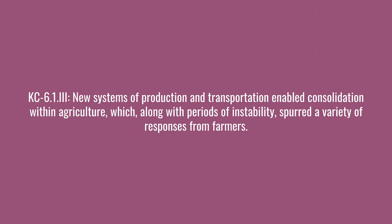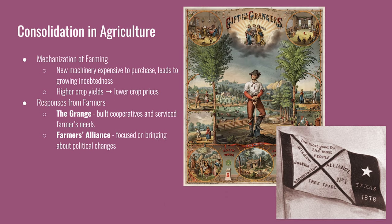The next key concept says new systems of production and transportation enabled consolidation within agriculture, which along with periods of instability spurred a variety of responses from farmers. The mechanization of farming makes it faster to plant and harvest crops, leading to farmers expanding their plots. It also becomes more expensive to be a farmer as they must buy more land and new machinery to compete with growing commercial farms, leading to growing indebtedness. Higher crop yields lead to a drop in crop prices, creating a cycle of lower prices as farmers plant even more crops.